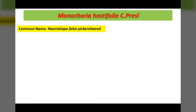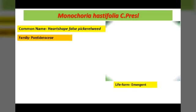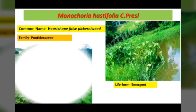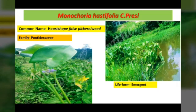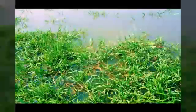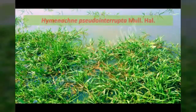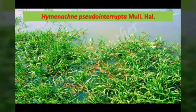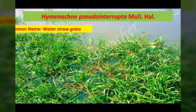Monochoria hastifolia, commonly known as the heart-shaped false pickerelweed, belonging to the family Pontederiaceae, is a perennial aquatic herbaceous plant with erect or obliquely erect stems. It occurs in permanent wet areas, fresh ponds, mud flats, river ditches, and rice fields. Flowering and fruiting occurs from July to October.